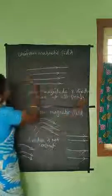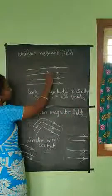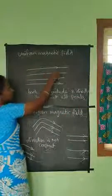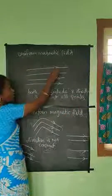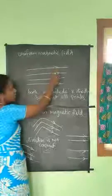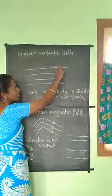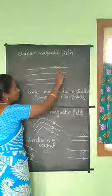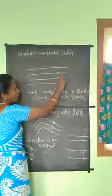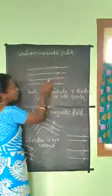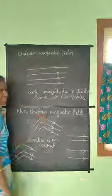Looking at the magnetic lines of force — in the magnetic field lines, you have equally spaced lines. The spacing between lines is equal throughout.